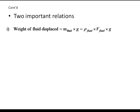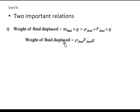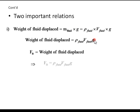There are two important relations that we should focus on. Weight of fluid displaced equals mass times gravity. Mass is density times volume, so weight of displaced fluid can be written as density of the fluid times volume of the fluid times g. And buoyant force equals density of the fluid times volume of the fluid times g.